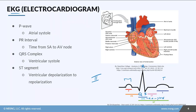If we compare this graph to what's happening during conduction: during the P wave, you're going to see atrial systole — this is the time that the SA node is conducting that action potential. Then you have the PR interval, which is the time from the sinoatrial node to the AV node — that slight delay we talked about. Then you have the QRS complex, and that's going to be your ventricular systole, when the ventricles are really squeezing. The ST segment represents ventricular depolarization to repolarization.